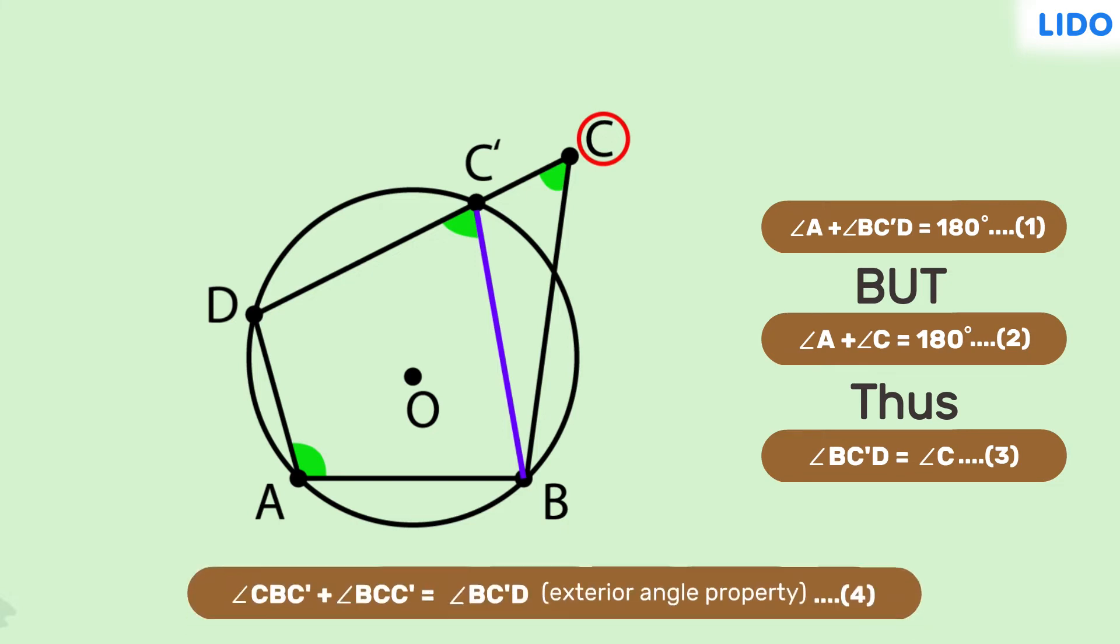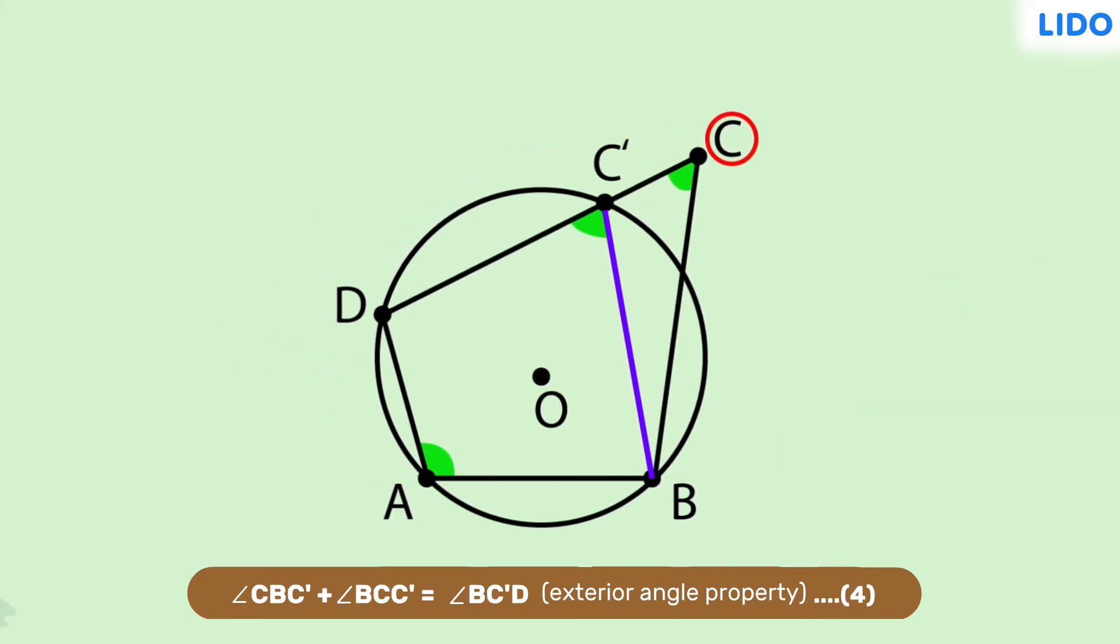Now in triangle BC'C, angle CBC' plus angle BCC' is equal to angle BC'D using exterior angle property. Let's mark this as equation 4. We can write angle BCC' as angle BCD.